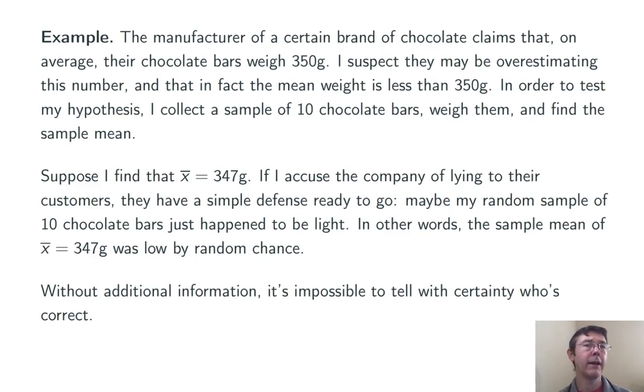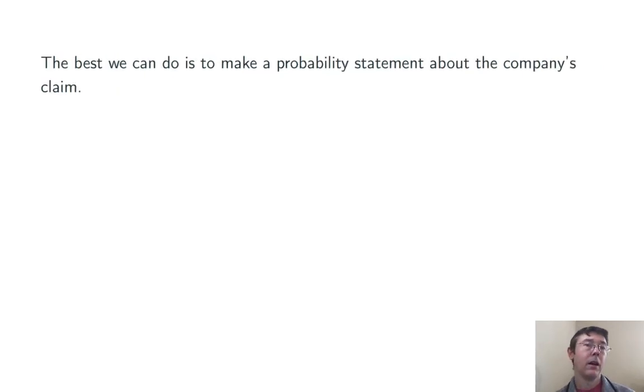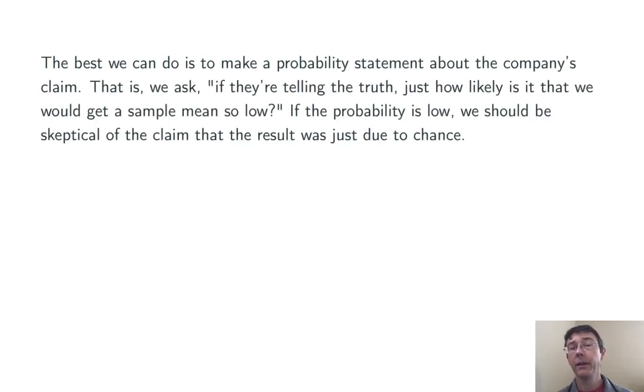I need to find some way of deciding between these two possibilities. The company is lying, or the company is telling the truth, and I just got a result due to random chance. The best we're going to be able to do in this situation is to make a probability statement about the company's claim. Something like, if the company is telling the truth, what's the probability that we would get a sample mean as low as the one we got, just by random chance? A lower probability is going to constitute stronger evidence against the company's claim.